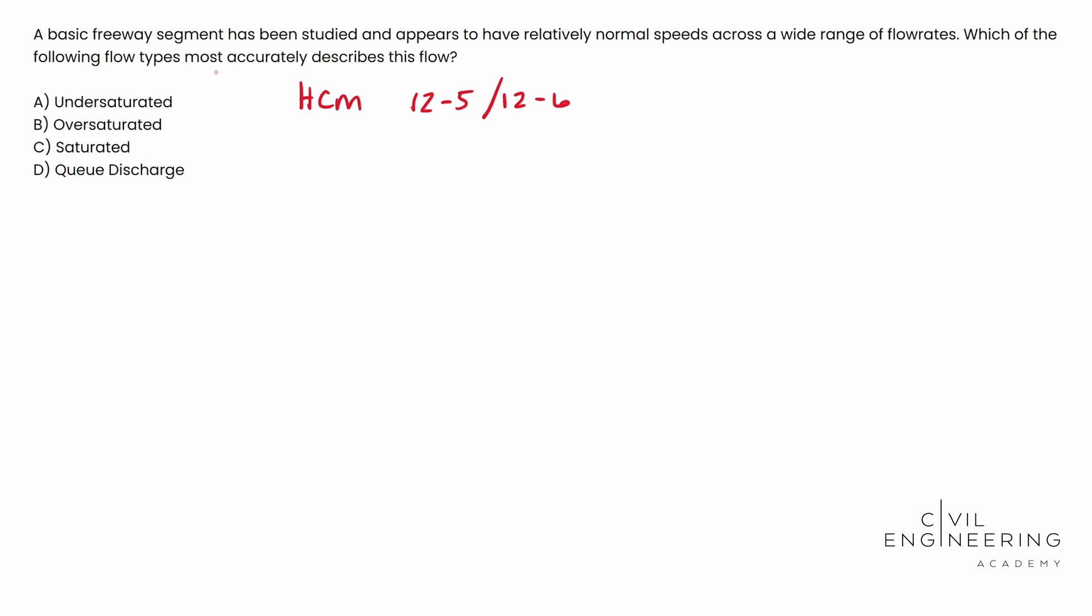And so when you look on that, you're going to find a blurb that describes each of the flows, each of the uninterrupted flow types. And basically there's three of them. There's unsaturated, oversaturated, and Q discharge. See there? Saturated. That's just made up. That's totally out of the blue. There's no such thing as a saturated flow rate in uninterrupted flow.